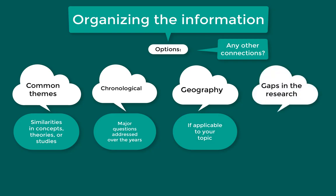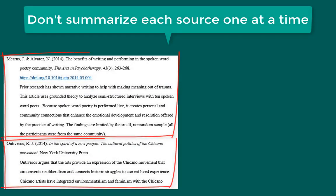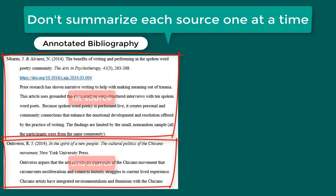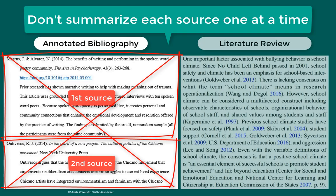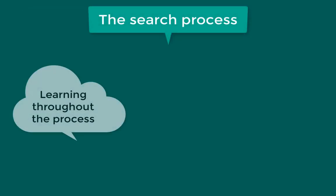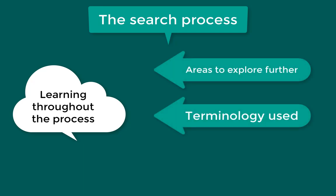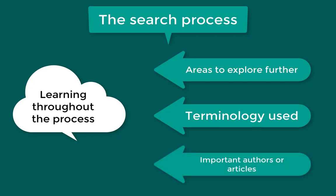In your outline, you can also identify gaps in the research or areas that require further research to help you determine what you might like to research yourself. It is important to note that a literature review does not summarize each source one at a time — that would be considered an annotated bibliography where there is a separate paragraph for each source. In your notes and outline, keep track of where all your information is coming from and list when you are going to talk about each source. You will learn a lot about your topic when reading and taking notes. You might notice a specific area to explore further, see certain terminology used in the sources that differs from words you initially searched, or notice particular authors or specific articles that are important to your topic.